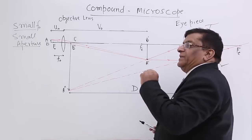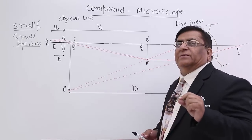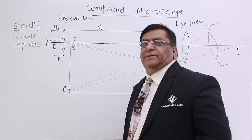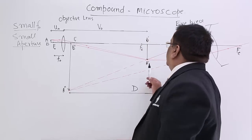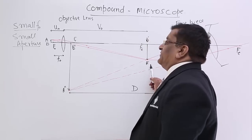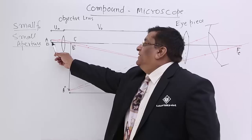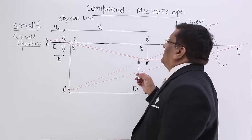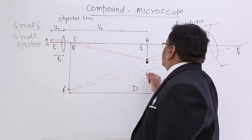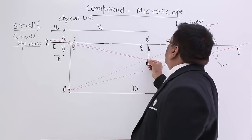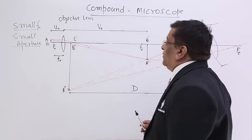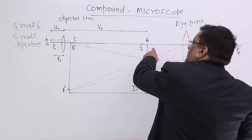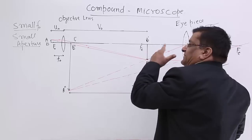When the rays meet at a point, they make a real image. Real image of A — that is A dash. The image of B will be made on the principal axis and perpendicular to it. So we draw a perpendicular here. AB makes an image A dash, B dash because of this objective lens.